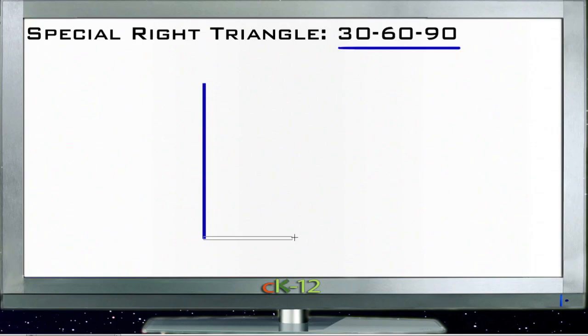Of course, this is just a guesstimate, but we get the idea. The 30-60-90 triangle will have a 30-degree angle, a 60-degree angle, and a 90-degree angle.